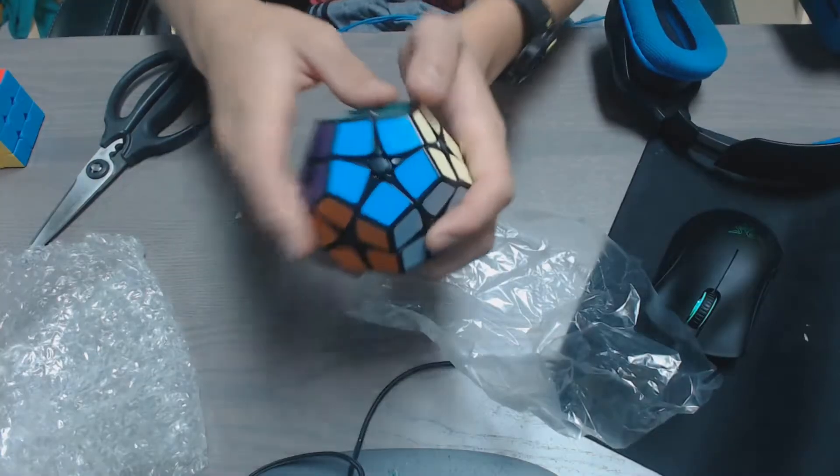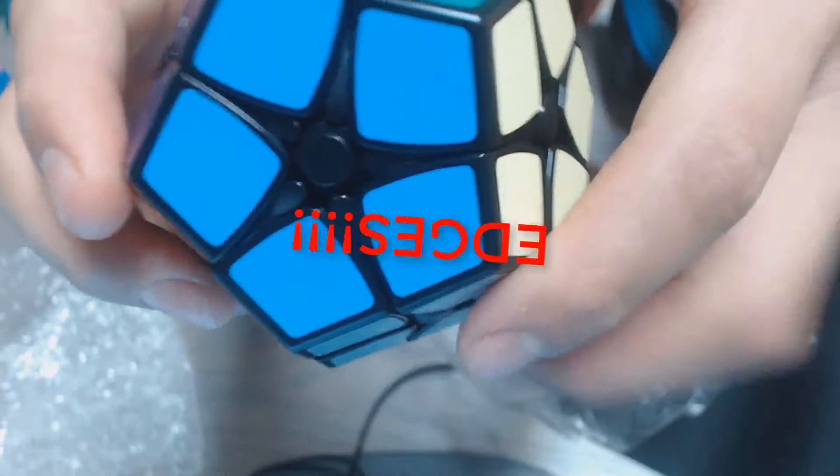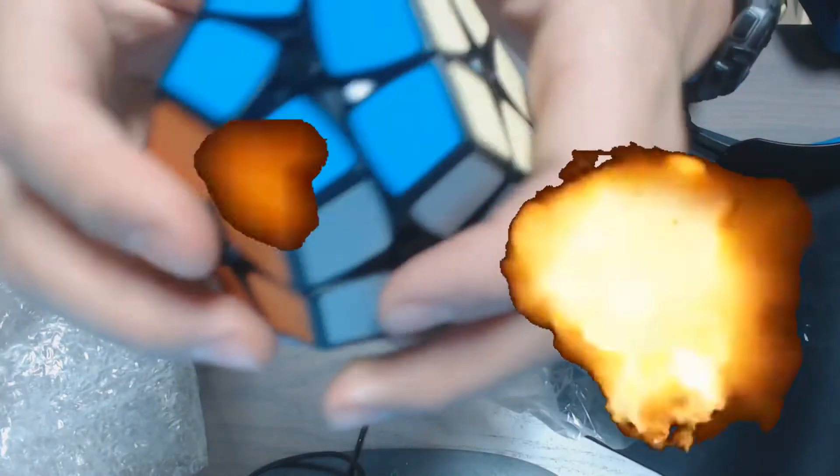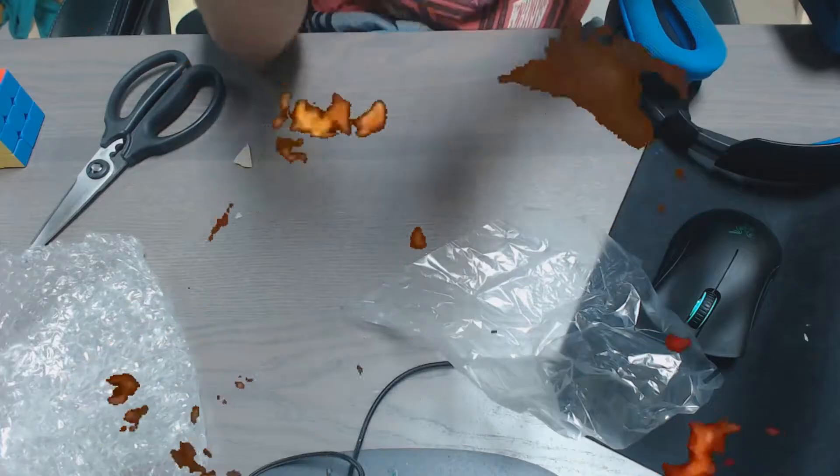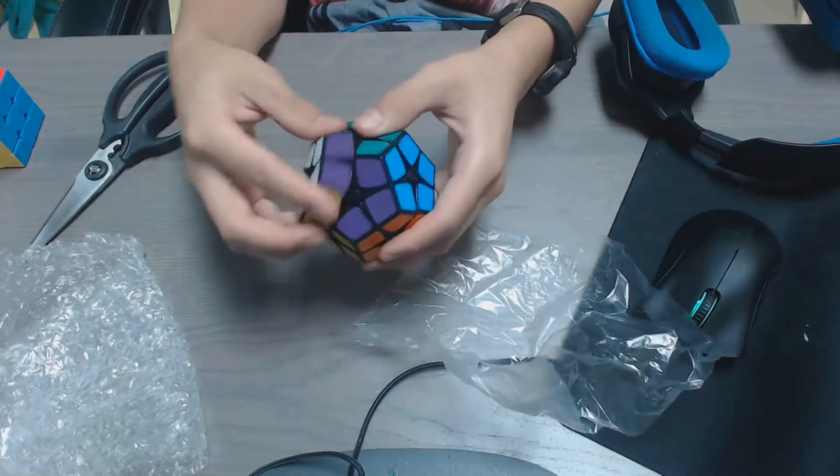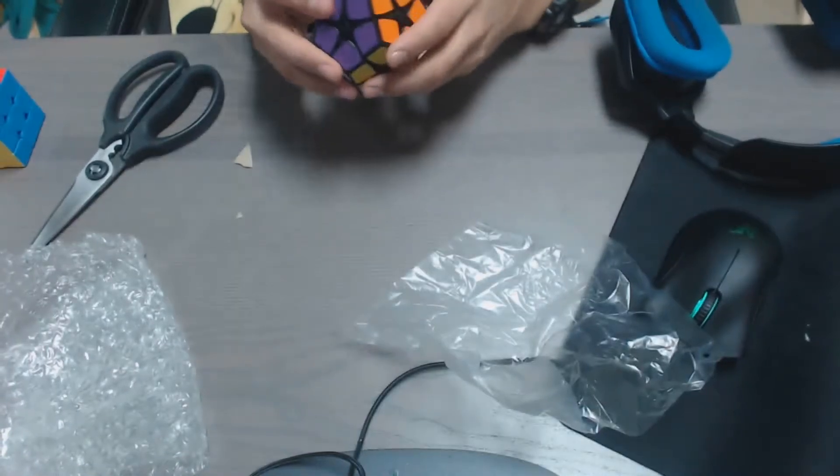If you look there, these little thin black pieces in between kind of move independently along with certain pieces. So when you turn this layer, they move. When you turn say this one, only certain ones move at a certain time. I don't know, I'm not going to bother trying to understand this right now.